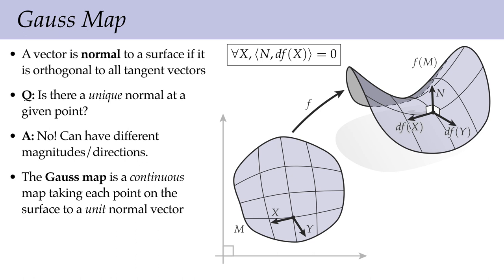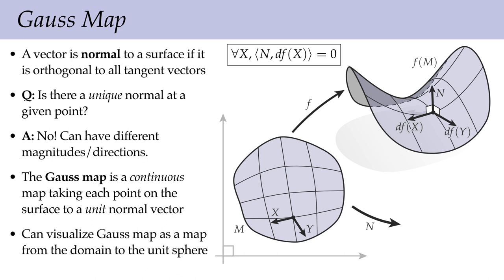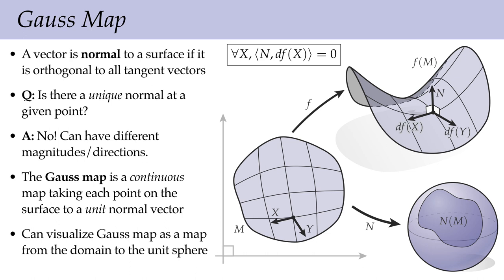An interesting thing about this way of thinking is that the Gauss map is not so different from our map f — it takes each point of the domain M and assigns it a unit vector, which we can think of as a point in three-dimensional space. So N is itself another kind of surface: just a surface that naturally arises from our initial surface f. When you look at any surface, there's this hidden surface sitting right there — the normals of the surface. In many cases, thinking about the Gauss map as a piece of the unit sphere is very helpful for understanding how surfaces work, especially when we talk about curvature in an upcoming lecture.